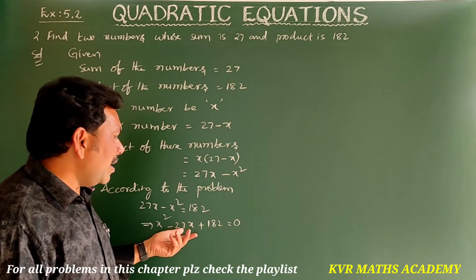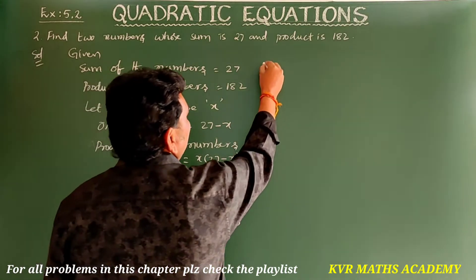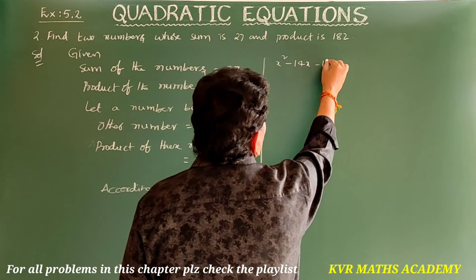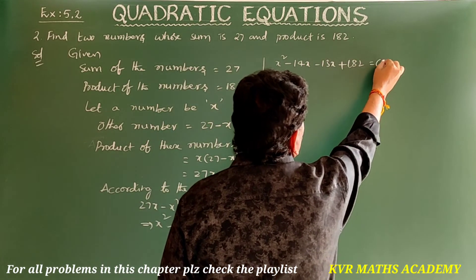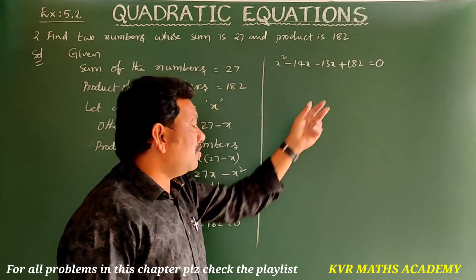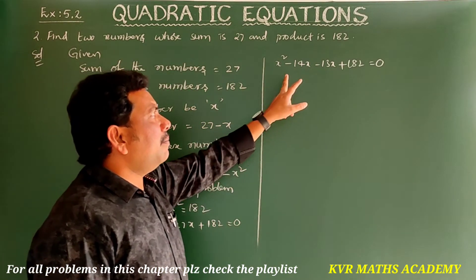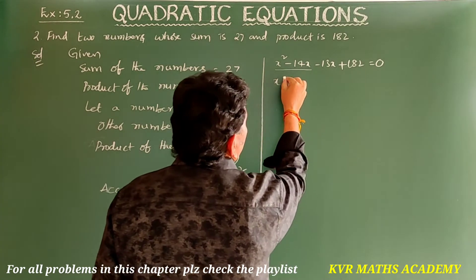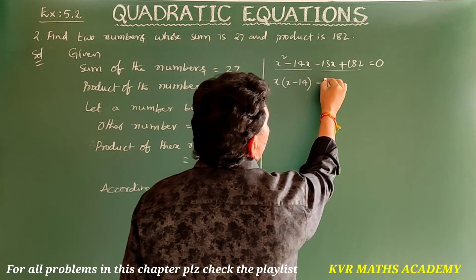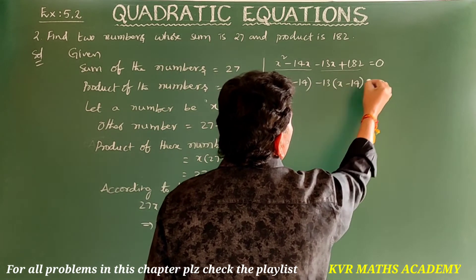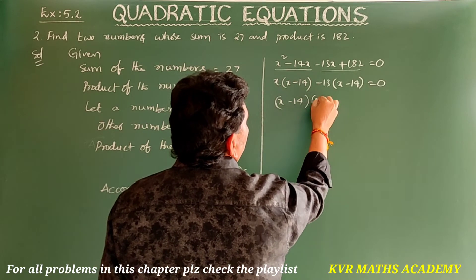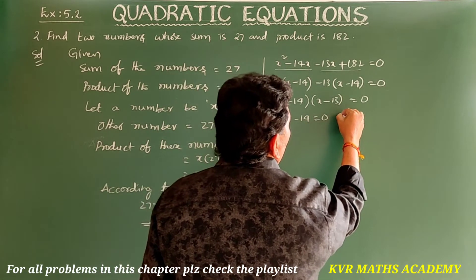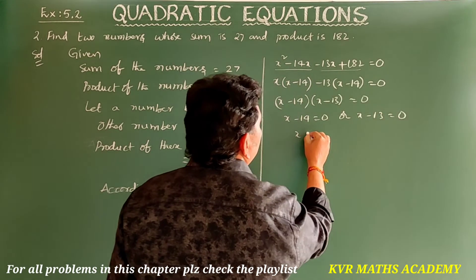For 182, we need factors that sum to 27. 13 times 14 is 182, and 13 plus 14 is 27. By factorization: x² minus 14x minus 13x plus 182 equals 0. Here minus 14x minus 13x gives minus 27x, and minus 14 times minus 13 gives plus 182. Taking x common: x(x minus 14), and minus 13 common: giving (x minus 14)(x minus 13) = 0.